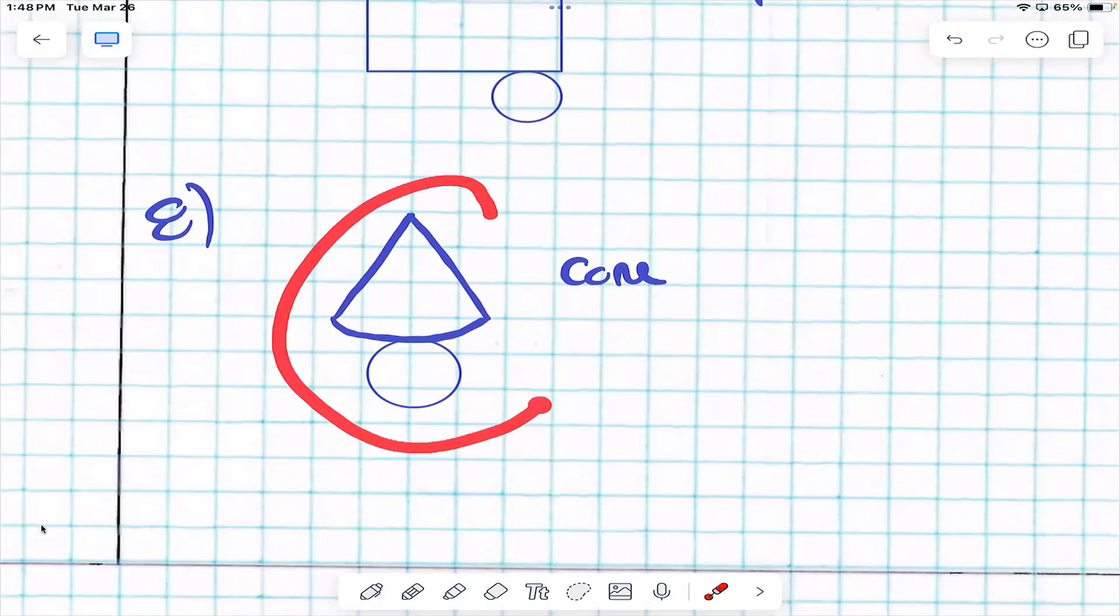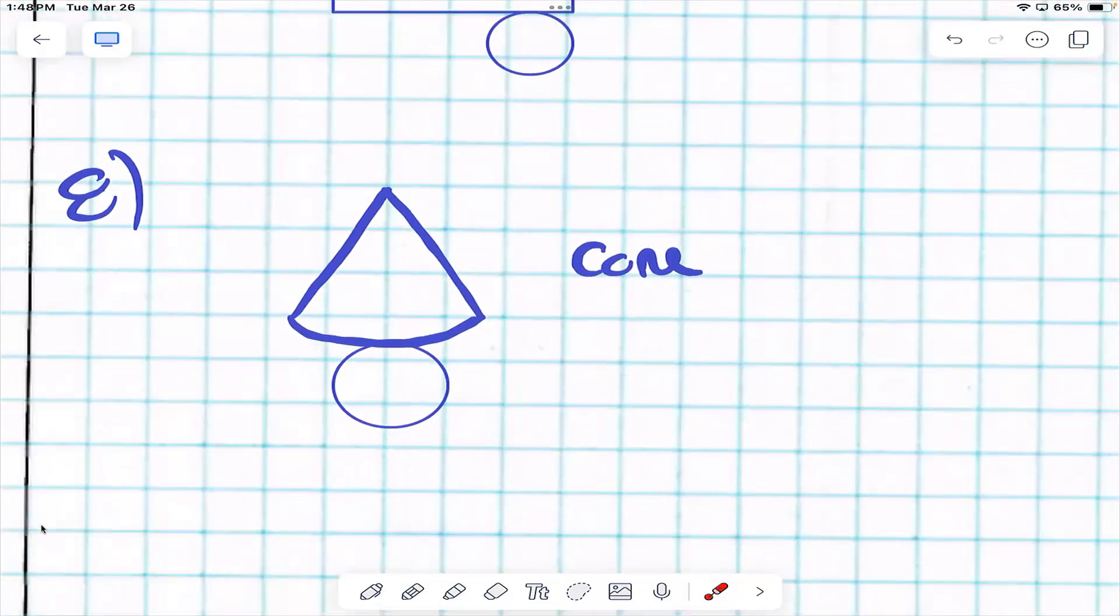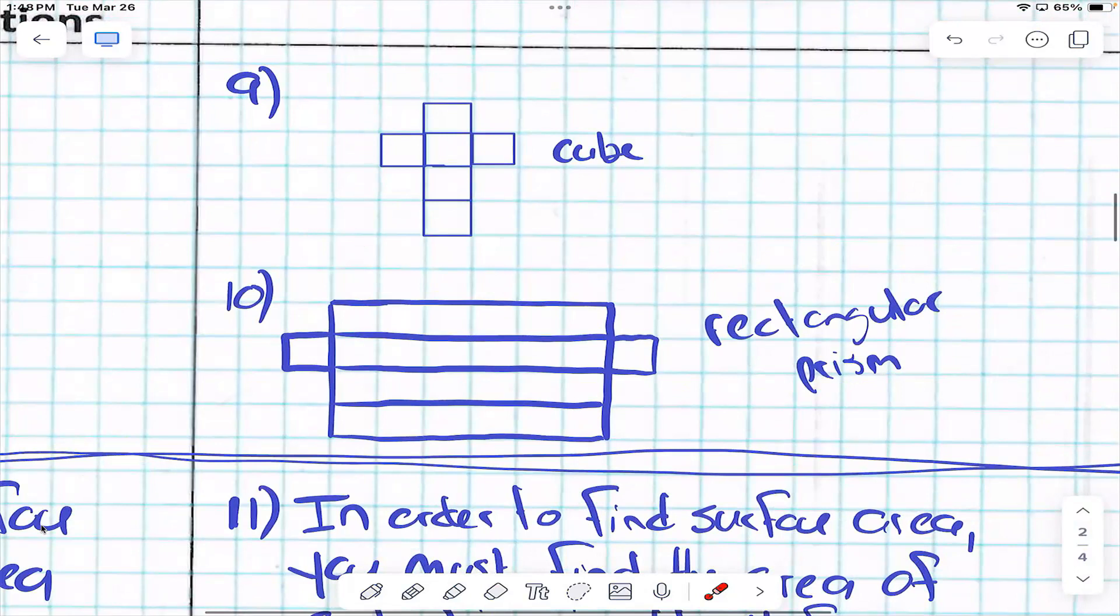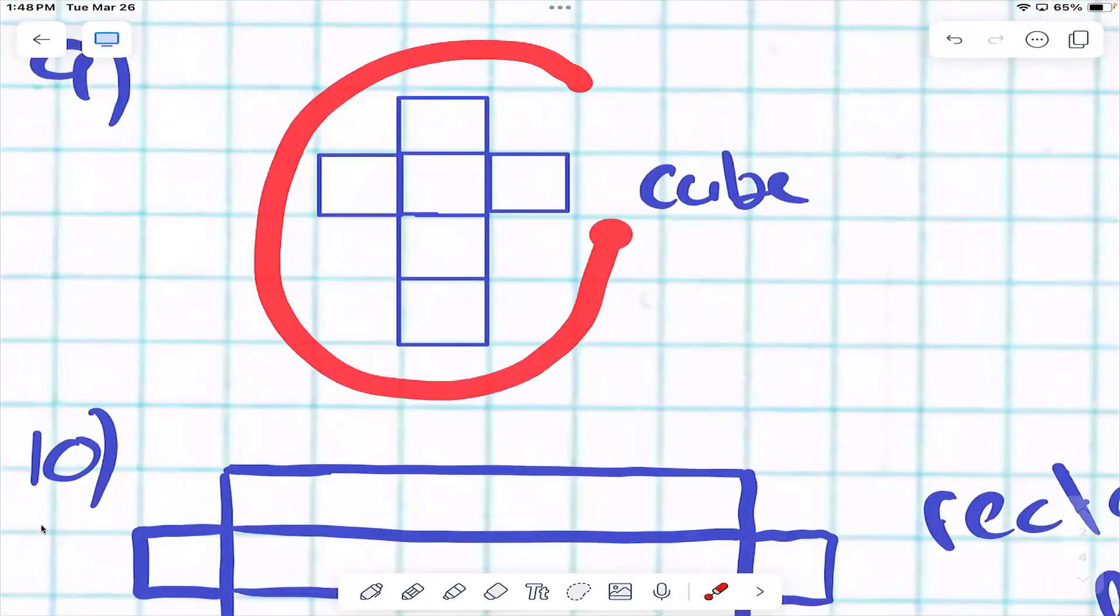This is a net of what? So you could take a cone and flatten it. It would look like this. Think of like a steamroller running it over. That's what it would look like. Flattened out. What does this net make? Cube.